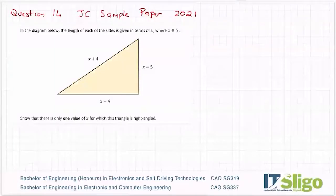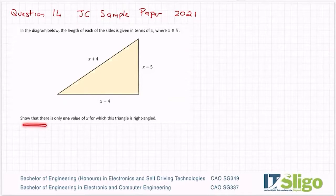Okay, so question 14, the final question on this sample paper. In the diagram below, the length of each side is given in terms of x, where x is an element of n. Show that there's only one value of x for which this triangle is right-angled.